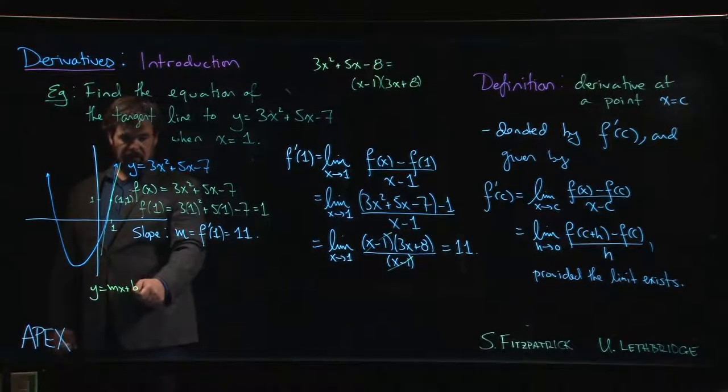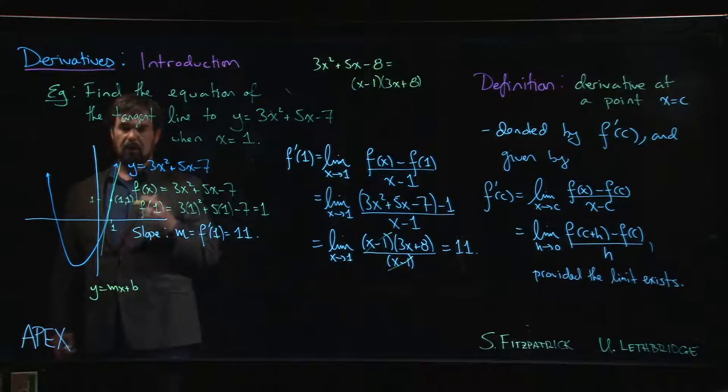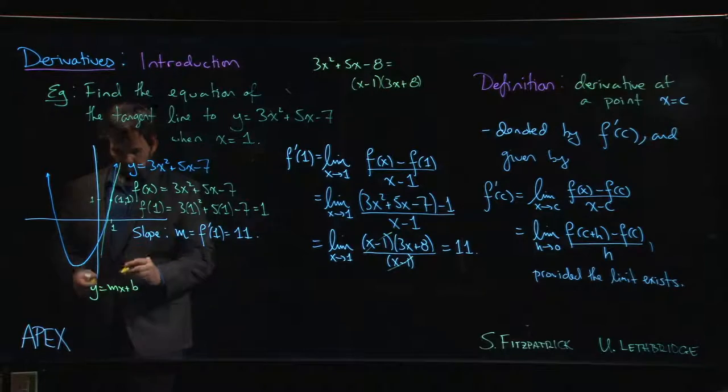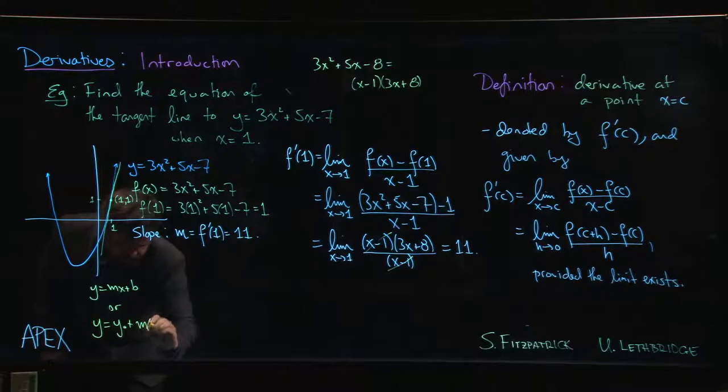But the trouble with this is you need to know the y-intercept. You need to know the y value when x is 0. And that's not the point on the line that we have. The point on the line that we have is (1, 1), because that's the point at which we're computing the tangent line.